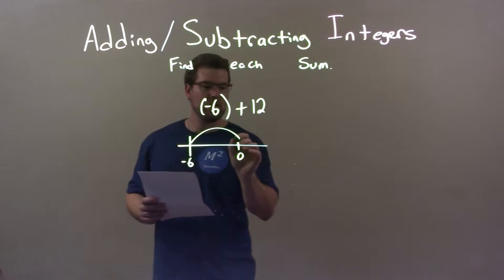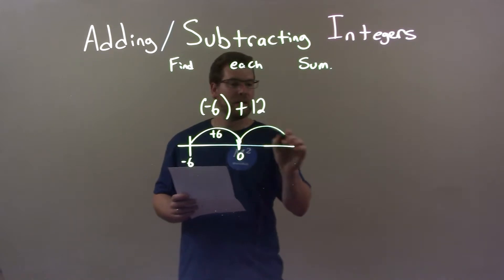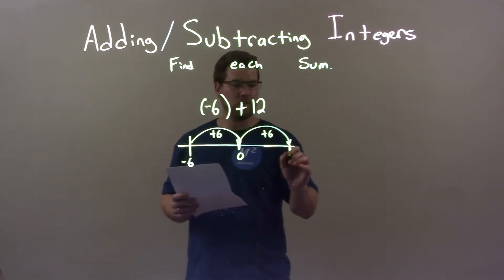If I move 6 units to get to 0, that's right there at 0, that's plus 6. I need to do 6 more to get a total of 12. We have 6 right here.